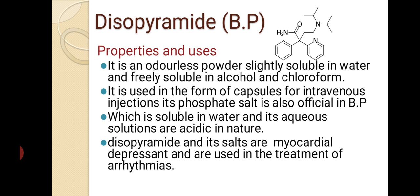The next drug is Disopyramide. It is an odorless powder, slightly soluble in water and freely soluble in alcohol and chloroform. It is used in the form of capsules and for intravenous injection. Its phosphate salt is official in BP, which is soluble in water, and its aqueous solutions are acidic in nature.